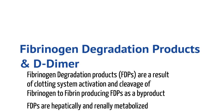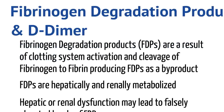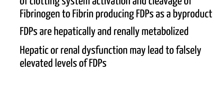Next, we'll look at fibrinogen degradation products and D-dimer. FDPs are a result of the clotting system activating and causing the cleavage of fibrinogen to fibrin. If the body is activating the clotting system at a very rapid rate, fibrinogen is being converted to fibrin very quickly, producing a lot of FDPs. So if the FDPs are high, we can infer that the clotting system is undergoing a massive activation. Fibrinogen degradation products are hepatically and renally metabolized, so if the patient has liver or kidney dysfunction, the FDPs may be falsely elevated — something to keep in mind when interpreting this test.